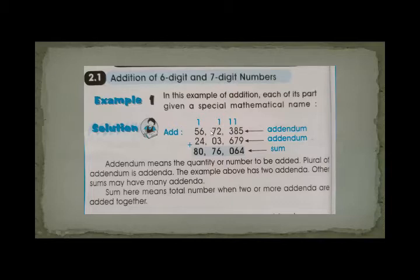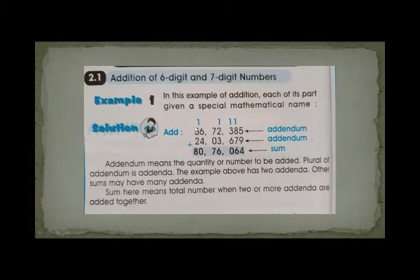Next, in the ten-thousands place: 7 plus 0 equals 7. Then, put a comma. In the lacs place: 6 plus 4 equals 10, write 0 and carry 1. Then 5 plus 2 equals 7, plus the carry 1 equals 8. So your sum is 8,076,064.